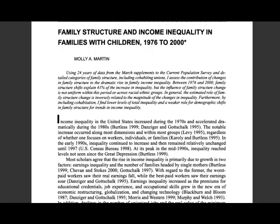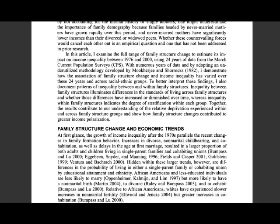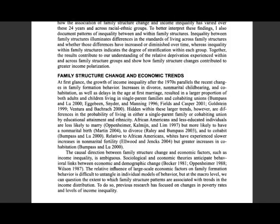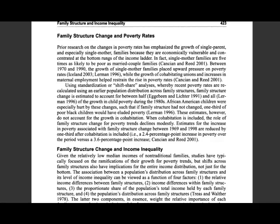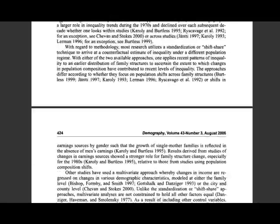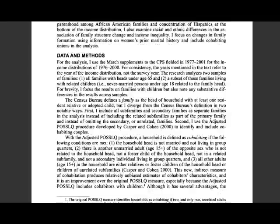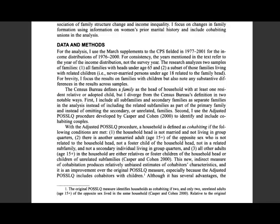Here you can see that the author has launched into a background on income inequality — going into family structure, changes in economic trends, changes in poverty rates, and changes in income equality. Her next section is the data and methods section. This is the third section, and following the scientific method, this is the area that corresponds to the hypothesis and the experiment.